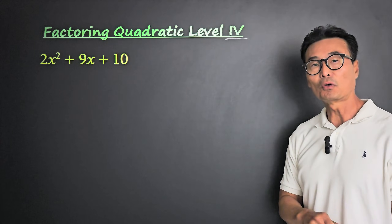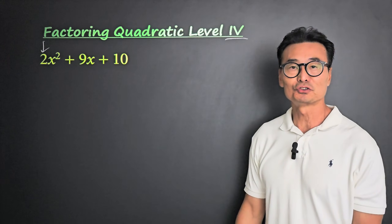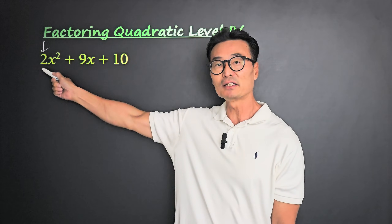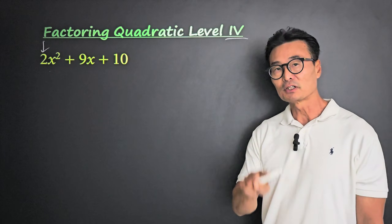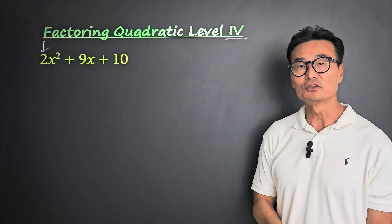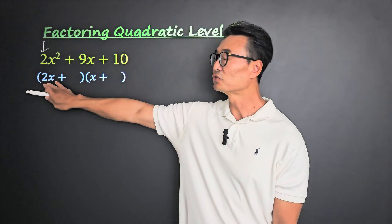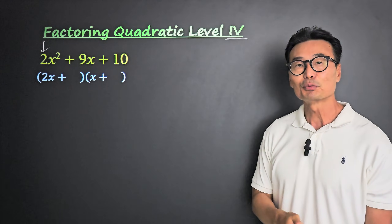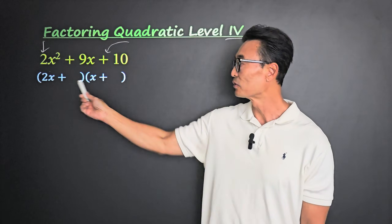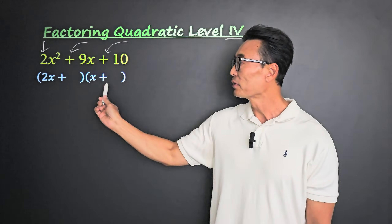For level 4 of factoring quadratic expressions, notice we no longer have a 1 in front of x squared — we have a 2. It's only level 4 and not level 5 because the coefficient of x squared is a prime number, meaning only 1 and 2 can be multiplied to get that 2. So we start with 2x in the front and x in the back. Since the c term is positive, the signs are the same, and since the b term is positive, they're both positive.